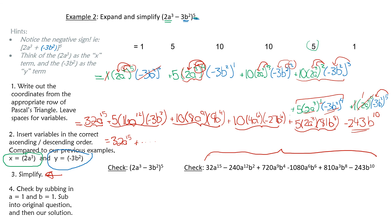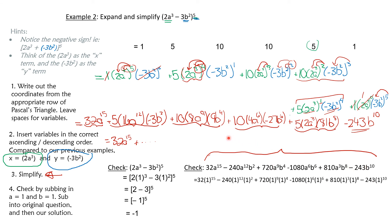We want to make sure after all this work that it is correct. We're going to substitute in really easy numbers: a equals 1 and b equals 1. Sub into the original question: 2(1) minus 3(1) to the power of 5 gives negative 1 to the 5, which is negative 1. Then sub a equals 1 and b equals 1 into our full expanded answer and use a calculator — we also get negative 1. So we know our answer is correct.